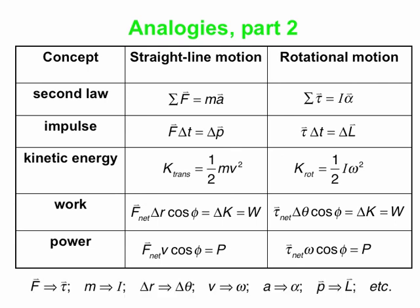You can always get from a straight line motion equation to its rotational equivalent by making the appropriate substitutions: force goes to torque, mass goes to rotational inertia, displacement goes to angular displacement, v goes to omega, a goes to alpha, momentum goes to angular momentum, and so on. Anything we've done for straight line motion has a rotational equivalent. So that is it for today.